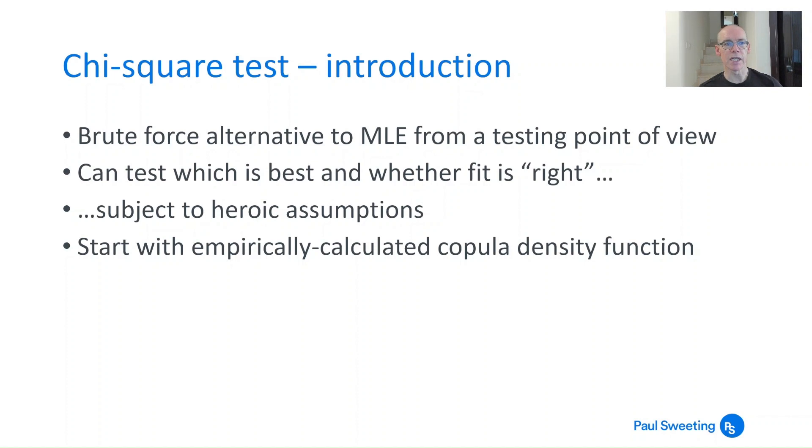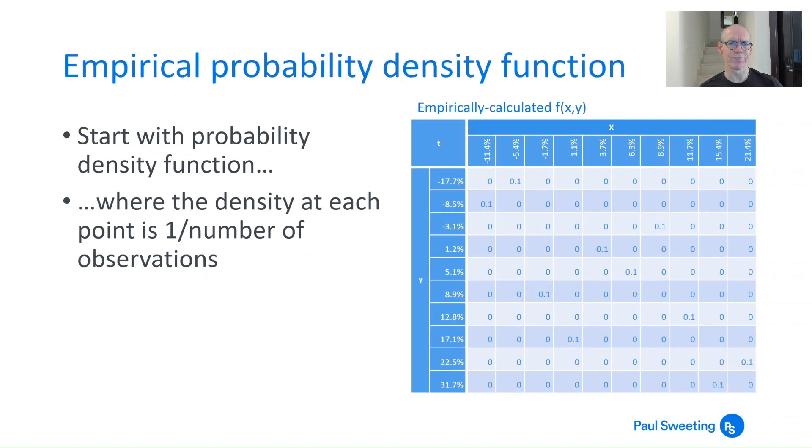The starting point is essentially an empirically calculated copula density function, which sounds quite involved but it's not actually that different to what we've already been dealing with. If you look at the probability density function, the empirically calculated probability density function based on the data we played around with last time, essentially if you've got a combination of returns that you've seen, so for example when x returned -5.4% and y returned -17.7%, you stick a number in that cell and that number is one divided by the number of observations. So there are 10 observations here, 10 pairs of returns, that means in each of those cells you get a value of 0.1.